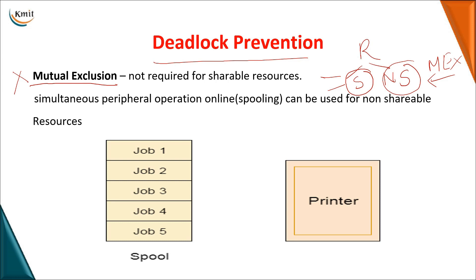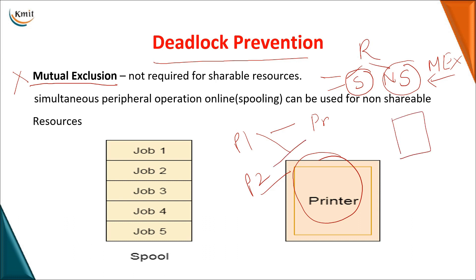For example, consider a printer. If two processes want to use the printer at the same time, the output will not be correct — pages from both jobs will be mixed. To avoid this problem, we use a technique known as spooling — Simultaneous Peripheral Operations Online — where all requesting processes are maintained in a queue and each job is given to the printer in FCFS order.